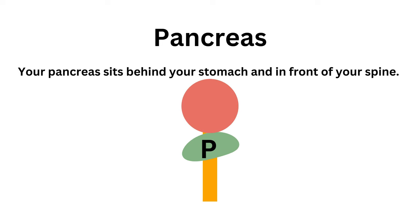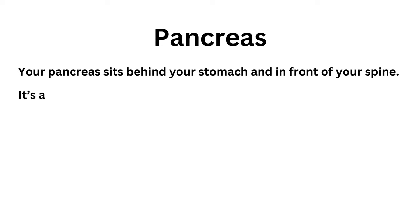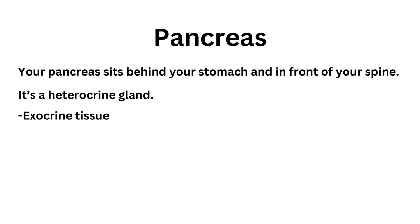The pancreas is a heterocrine gland. Hetero means different, so your pancreas contains two different types of tissues: exocrine tissue and endocrine tissue. Your pancreas is a part of both your digestive and endocrine systems.